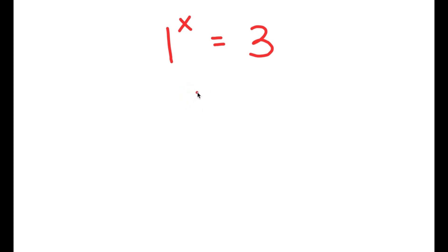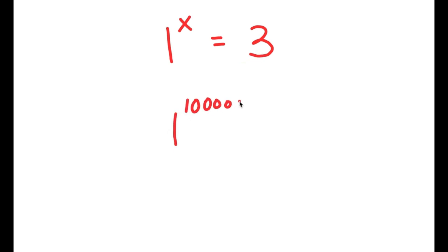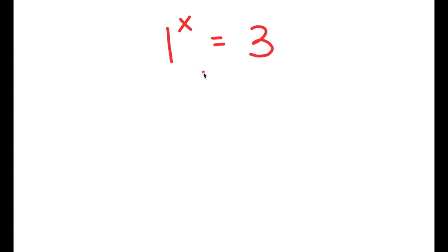Now for the second equation: 1 to the power of x equals 3. This might seem like an impossible equation — how can 1 to the power of any number equal 3, when 1 to the power of even a million is still equal to 1? Well, let's try to solve this the way we would solve any other exponential equation.